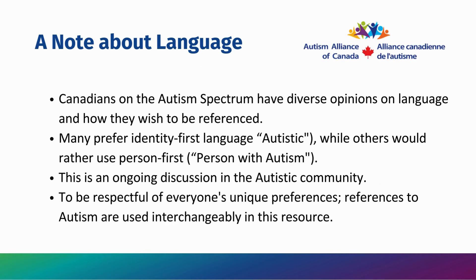A quick note about language. Canadians on the autism spectrum have diverse opinions on language and how they wish to be referenced. Many prefer identity-first language, such as 'autistic,' while others would rather use person-first language, such as 'person with autism.' This is an ongoing discussion in the autistic community. To be respectful of everyone's unique preferences, references to autism are used interchangeably within this resource.